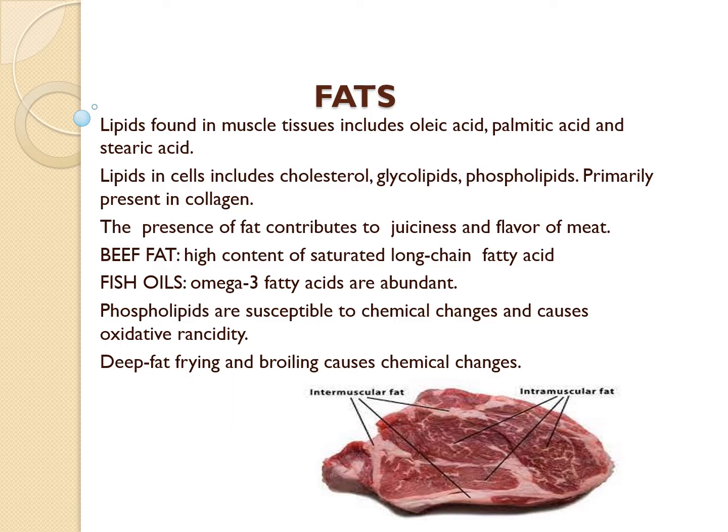Lipids occur in muscle tissue and also in fat deposits. The fatty acids found most evidently in the triglycerides in the fat deposits are oleic acid, palmitic, and stearic. In the cells, the lipid and lipid-related compounds include cholesterol, glycolipids, and phospholipids. These lipid components are deposited in fat cells in the matrix of connective tissue, primarily collagen.